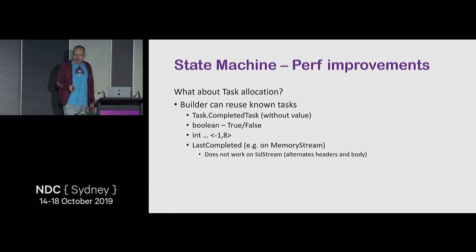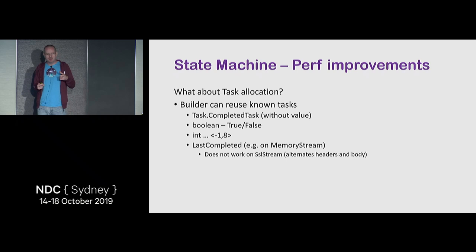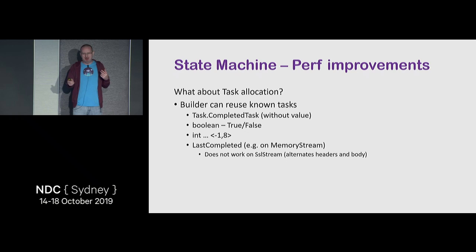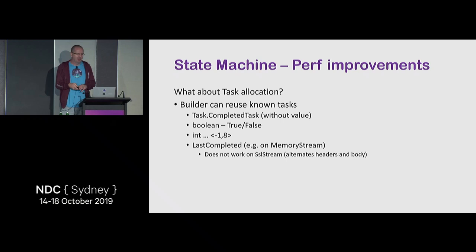This doesn't work for something like SslStream, where you have headers and body of different sizes — they won't always fall in the minus-one-to-eight range. You'd need to cache the last two completed tasks and alternate between them. The size of a Task object is actually 64 or 72 bytes depending on whether it has a return value. In Azure or cloud workloads the GC collects them, but on a hot path it can hurt performance by 5 to 10 percent by inducing more GC pressure.